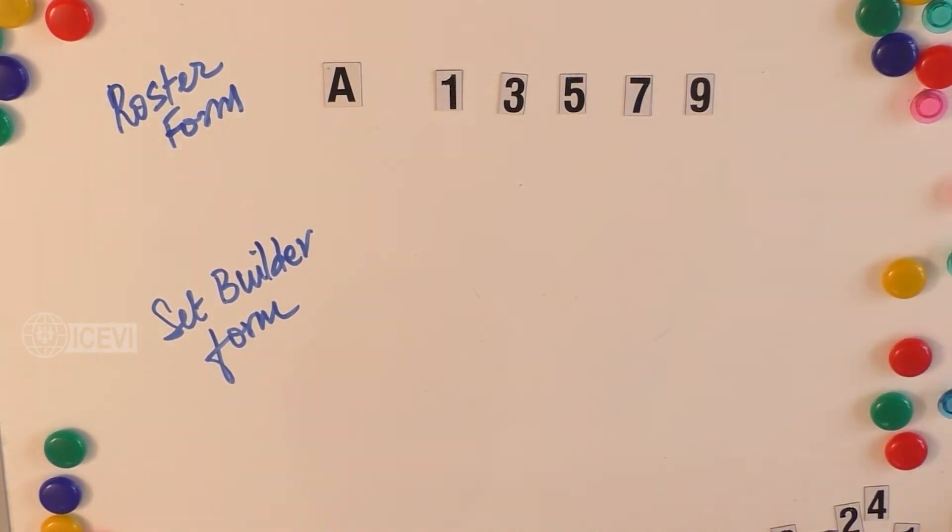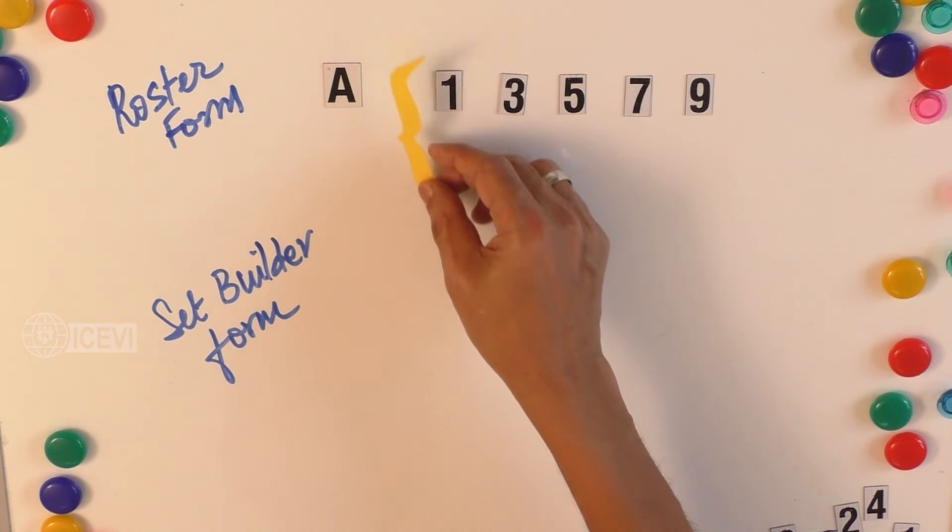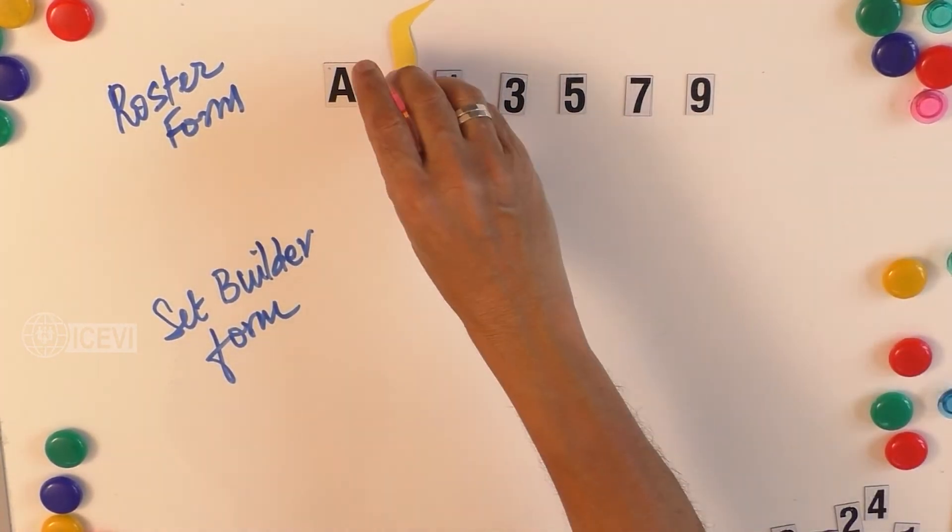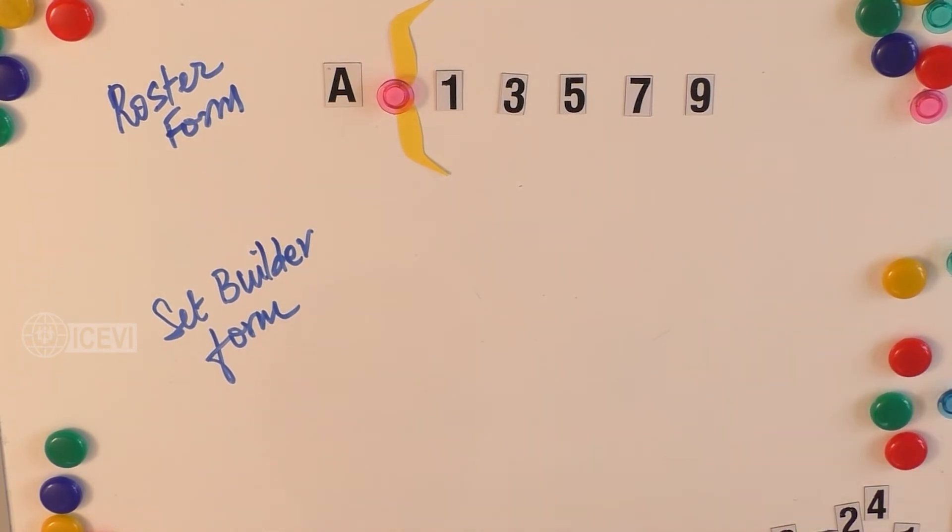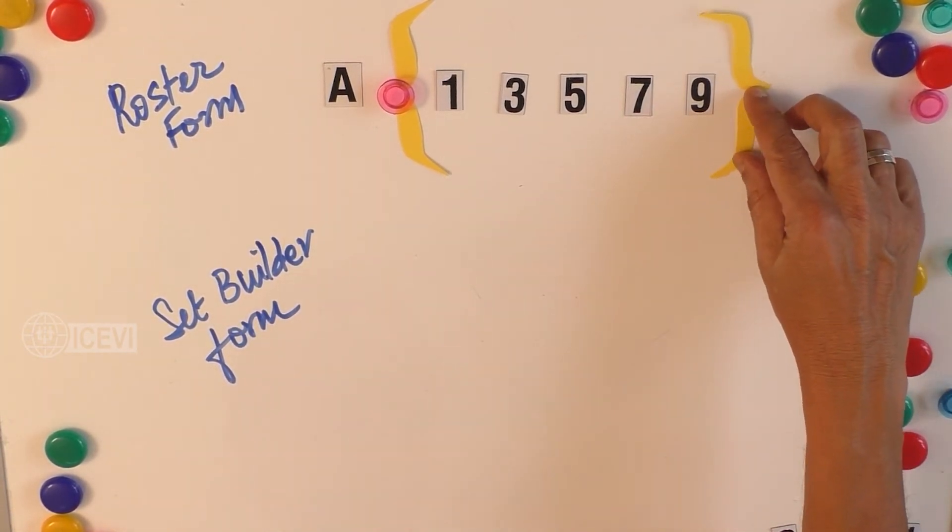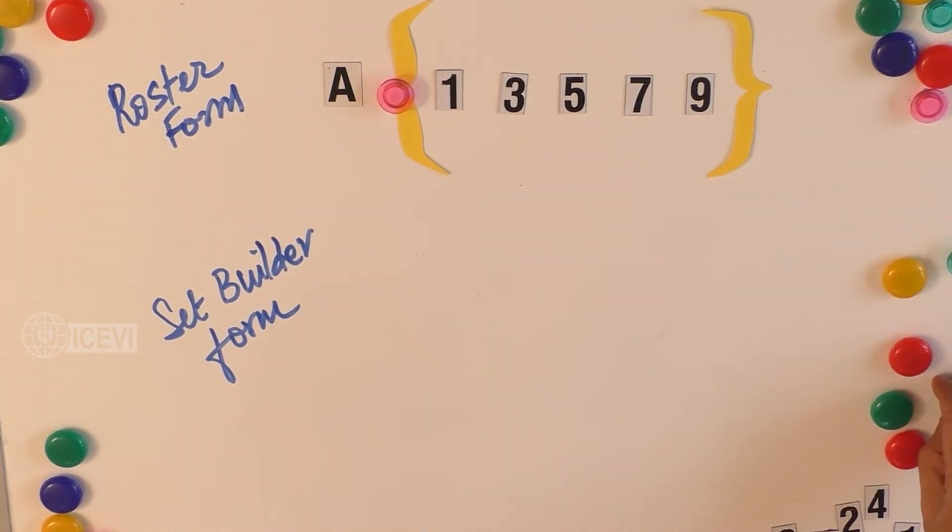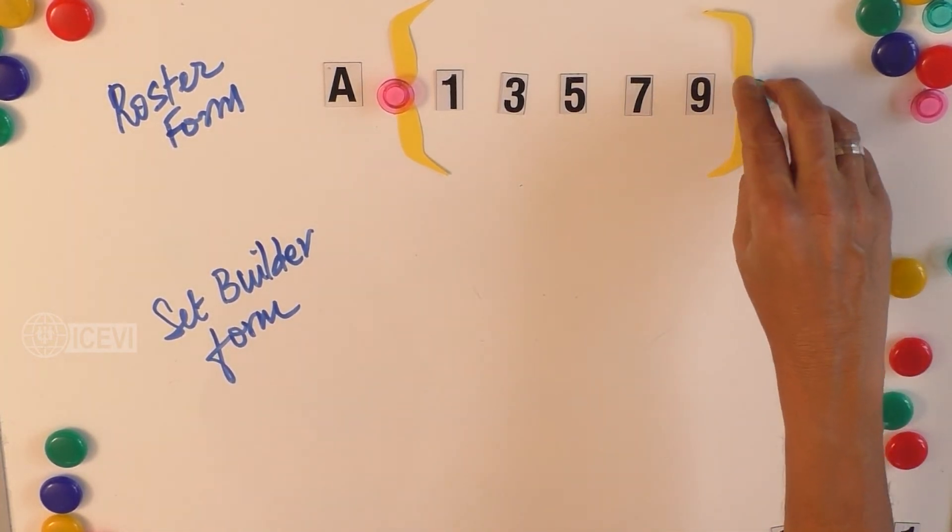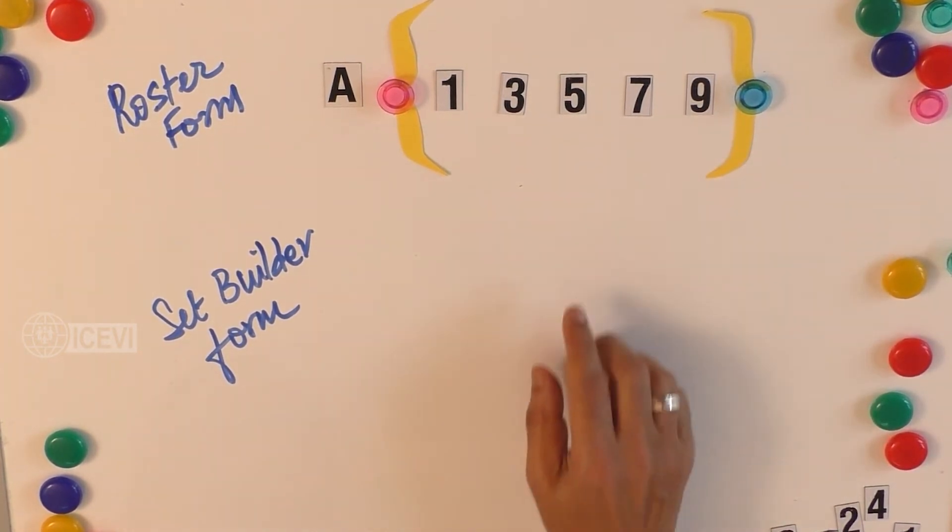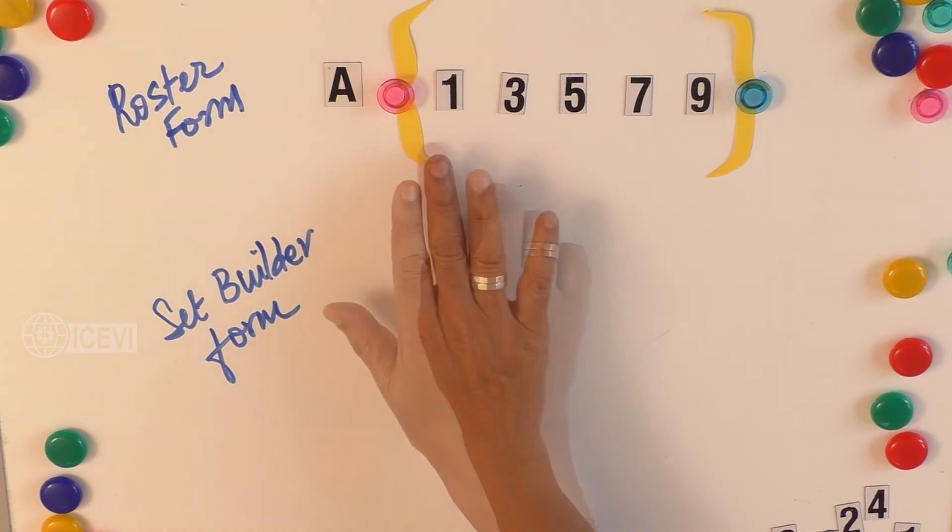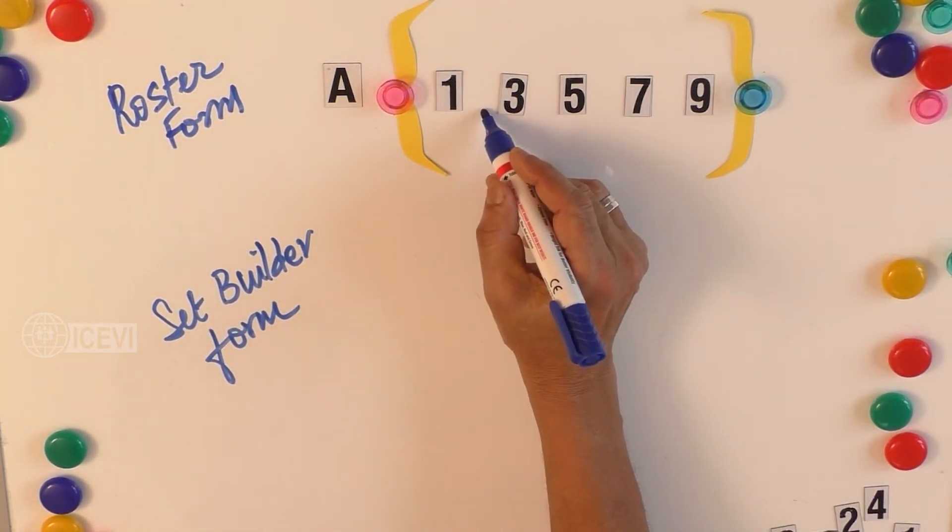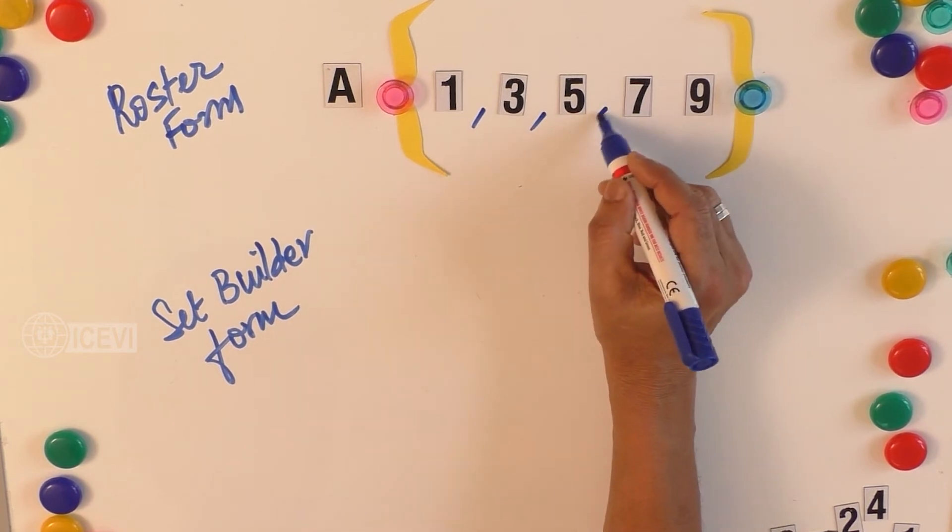As indicated from time to time, you have to explain to the child that the curly bracket comes before the set and then the curly bracket is closing the set, and it should be placed after the last element. In the Roster Form,